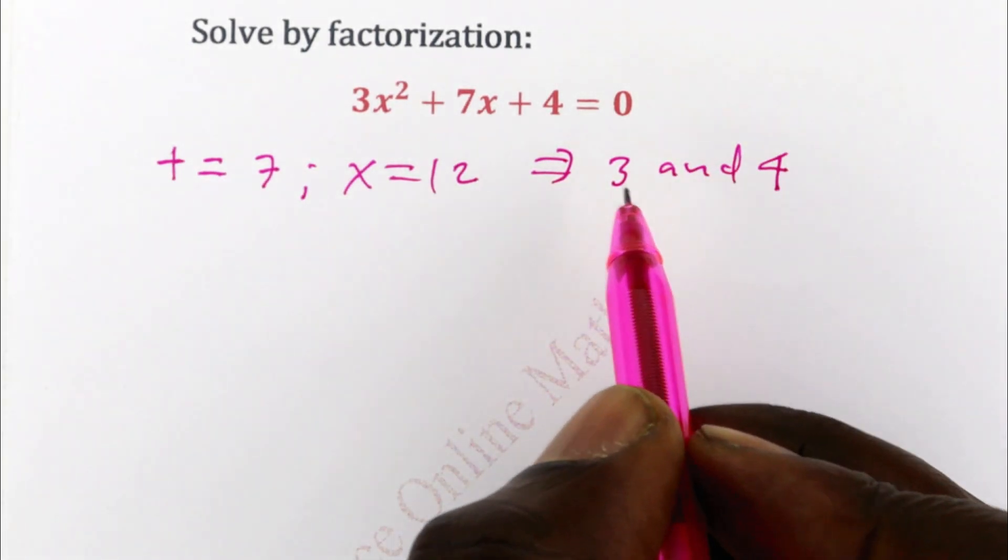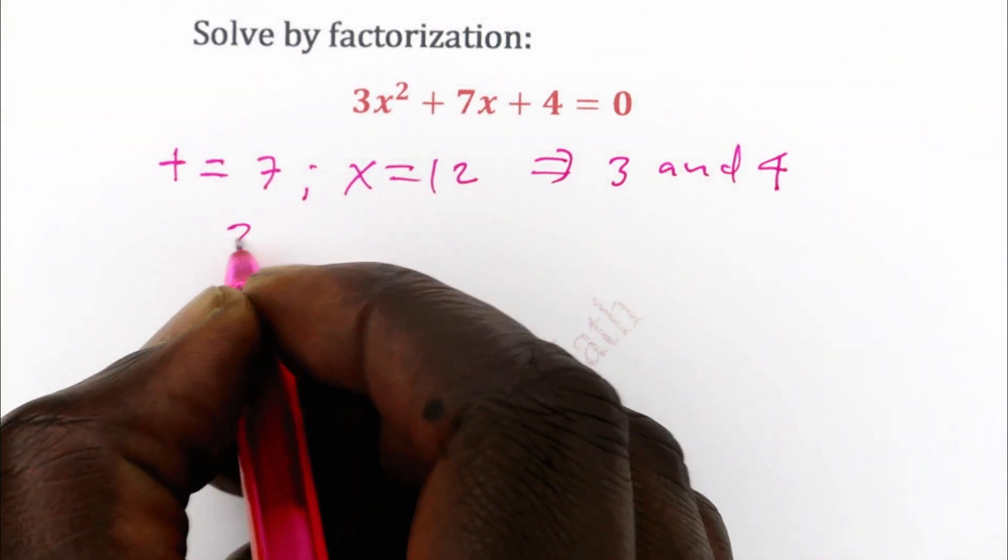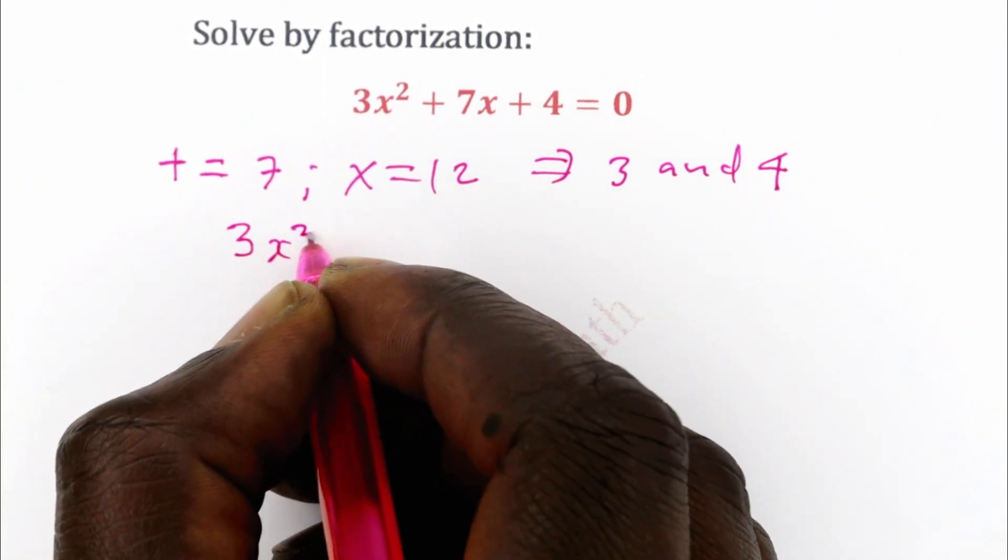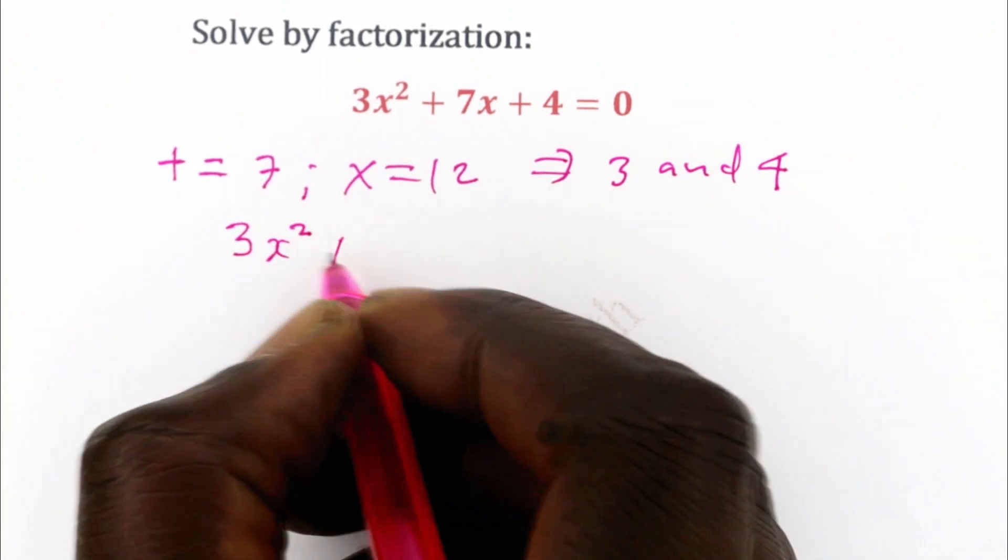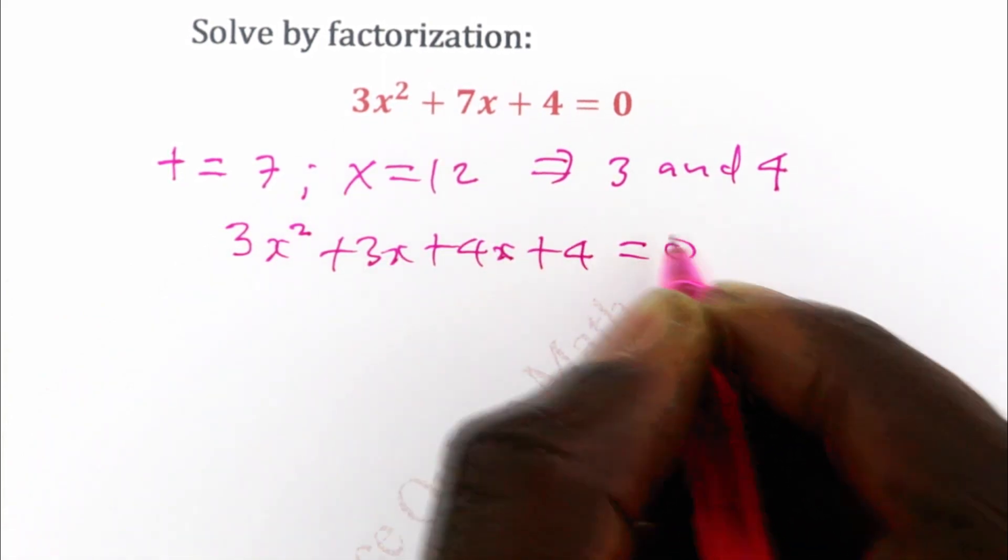So the next thing is just to split b, that is 7, into 3 and 4. So you do that by writing this equation as 3x squared plus 3x plus 4x plus 4 is equal to 0.